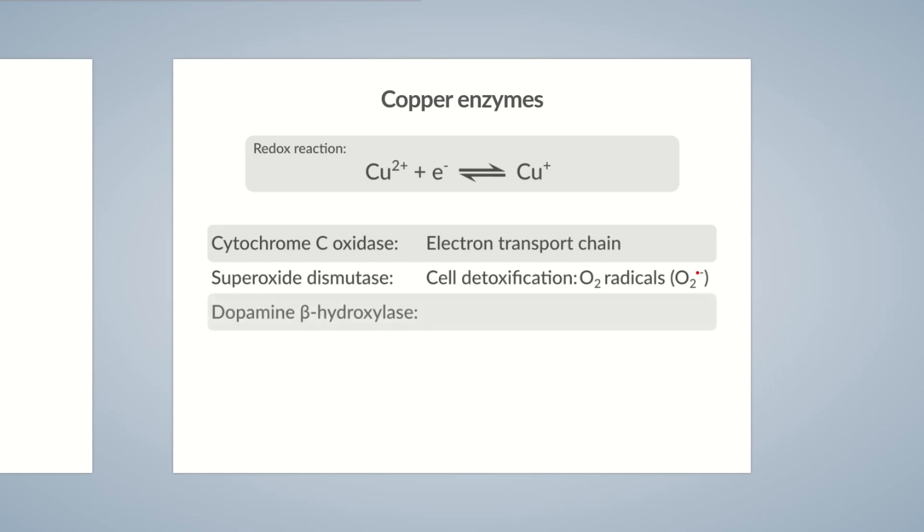Dopamine beta-hydroxylase also contains copper. It catalyzes the conversion of dopamine to noradrenaline and, in an additional step, to adrenaline.